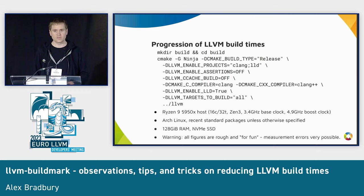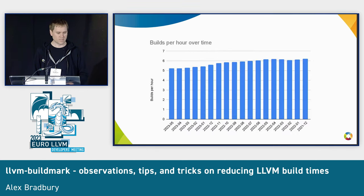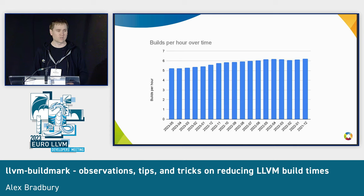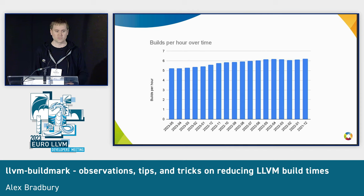I'll pick through a few things that can be helpful for slightly faster incremental builds. Before doing that, this is kind of how a standard release build of LLVM — specifically Clang, LLVM, and LLD — with all of the default targets has evolved over time.